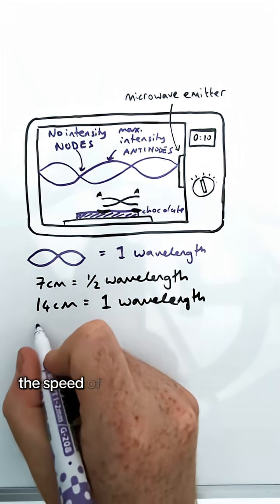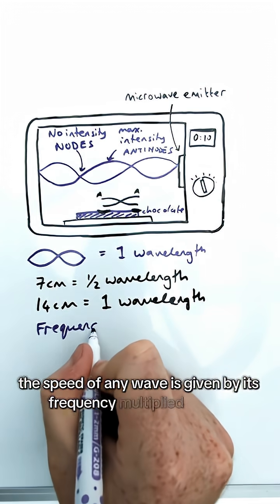Next, for the calculation, the speed of any wave is given by its frequency multiplied by the wavelength.